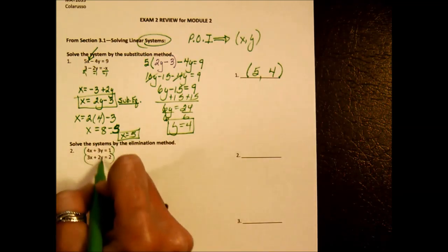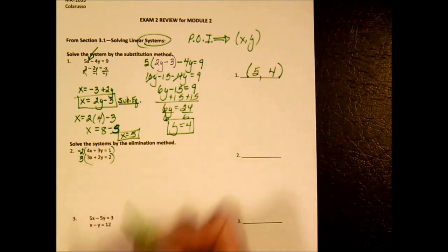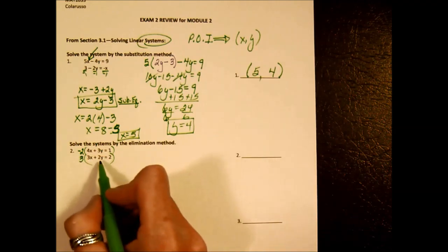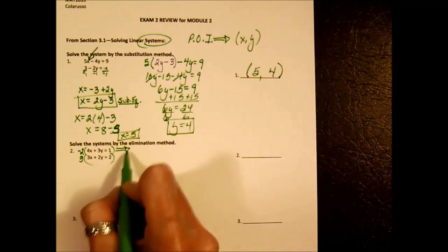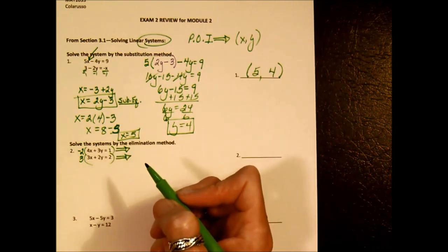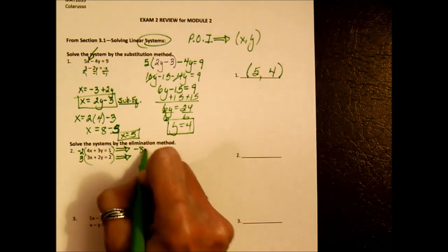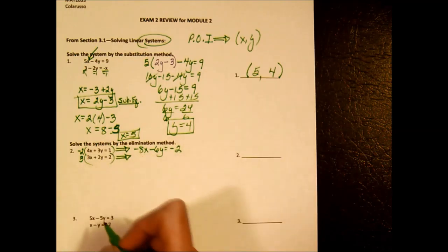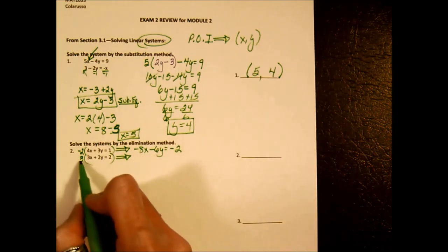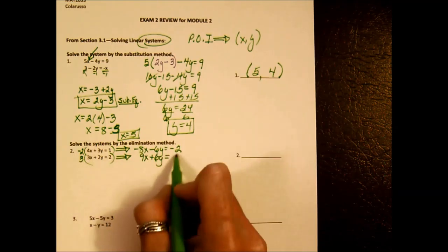I'm going to get rid of the y's by turning them both into 6's — but this one will become negative 6. I'll multiply this equation by 3, causing this y to become positive 6. So we distribute that negative 2, getting negative 8x minus 6y equals negative 2. Don't forget to distribute it all the way through.